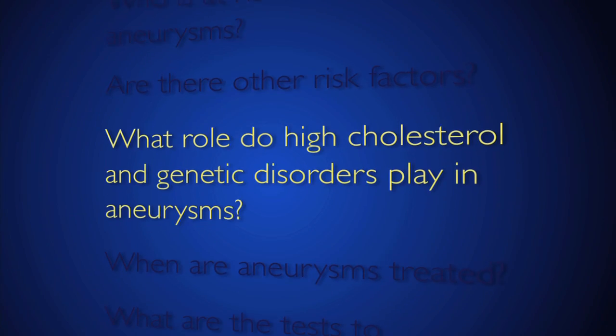People at risk for aortic aneurysmal disease include patients who are over the age of 50. It's more likely to be found in men than women, and it can also be found in certain genetic disorders such as Loeys-Dietz syndrome or Marfan syndrome. The most common causes of aneurysms in general are smoking and hypertension, and we are now beginning to understand that high cholesterol also plays a role in their development.